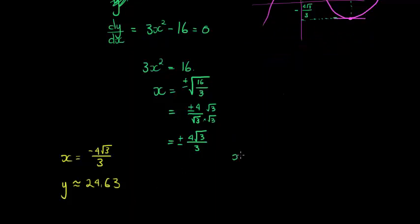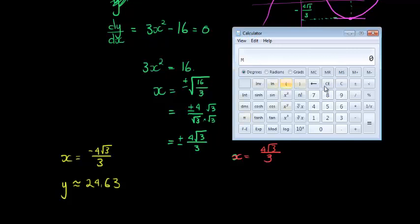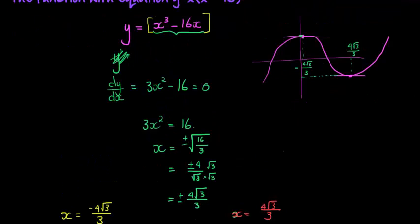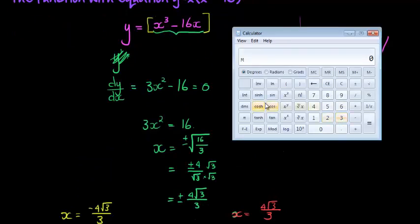The next one was x is equal to positive 4√3/3. If we substitute into our formula, we have memory recall cubed minus 16 times memory recall. And that gives me negative 24.63.